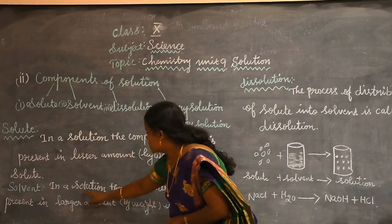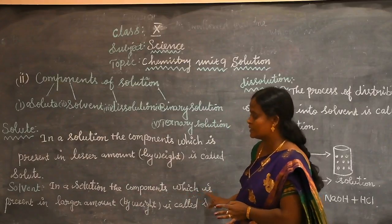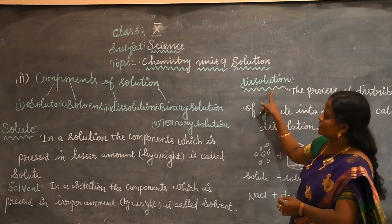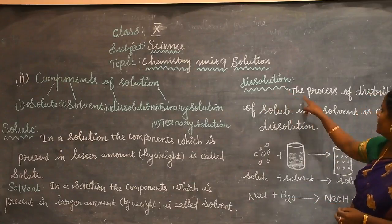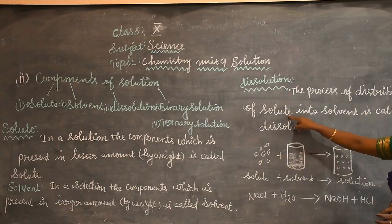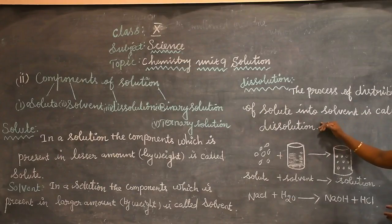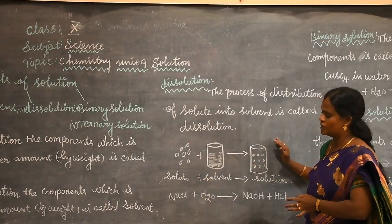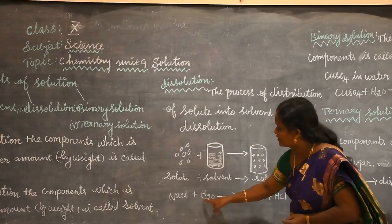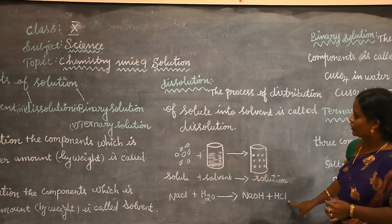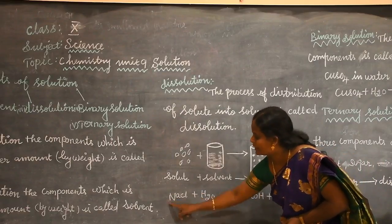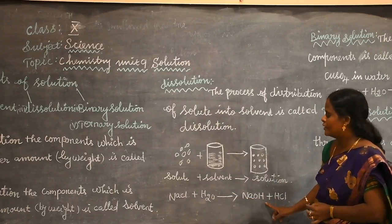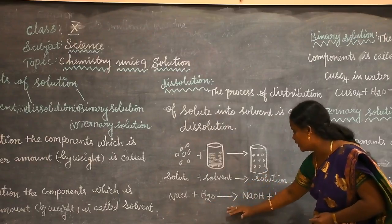Solvent means in a solution, the component which is present in larger amount is called solvent. Let us see dissolution. What is called dissolution? The process of distribution of solute into solvent is called dissolution. A solution means one solute plus one solvent gives a solution. For example, sodium chloride reacts with water to give a product. Here, sodium chloride is a solute and water is a solvent, so solute plus solvent gives a solution.